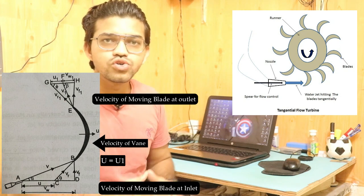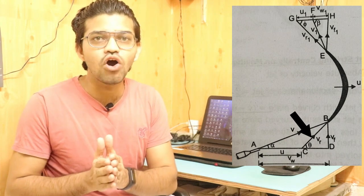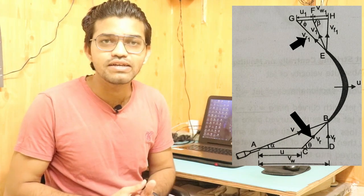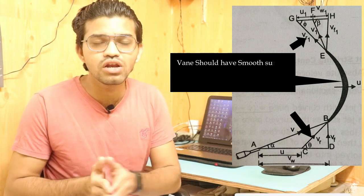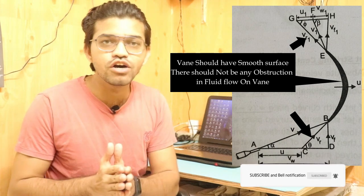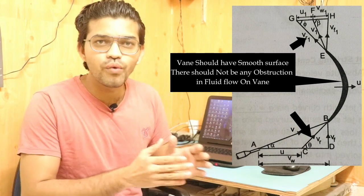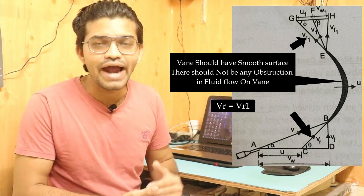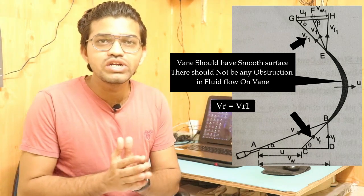The relative velocity of the jet at inlet and relative velocity of the jet at outlet are also the same, provided that the vane has a smooth surface — there should be no friction as the jet slides over the vane and no interference. Under this condition, vr equals vr1: the relative velocity of the water jet at inlet equals the relative velocity at outlet. These are our two key conditions.